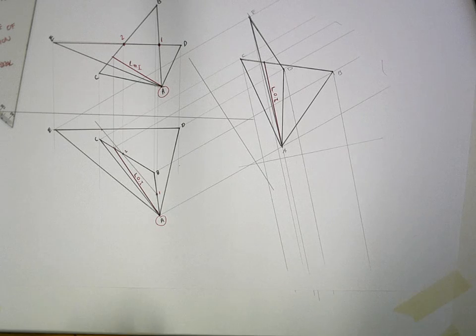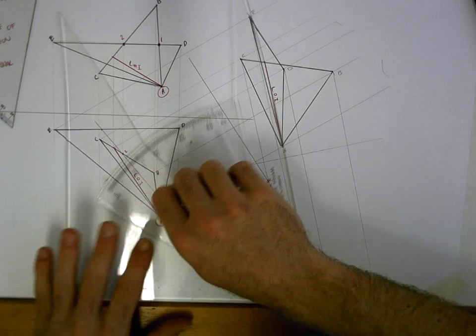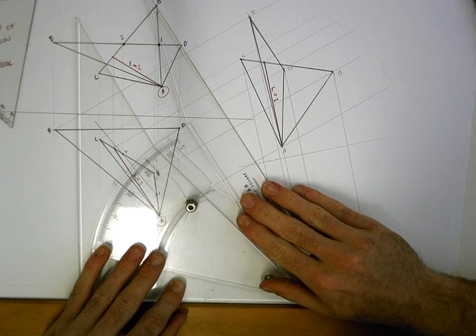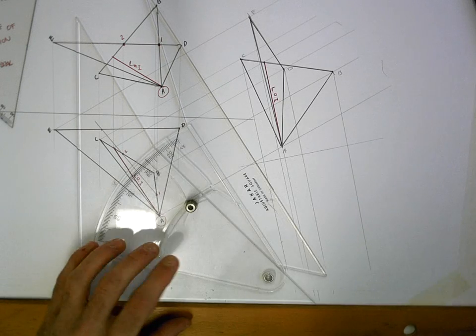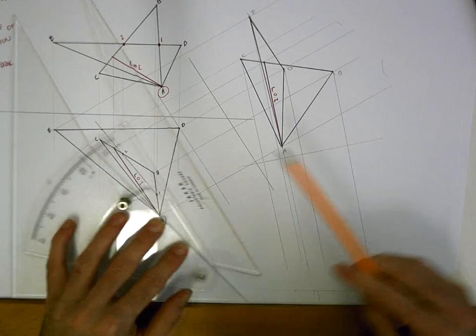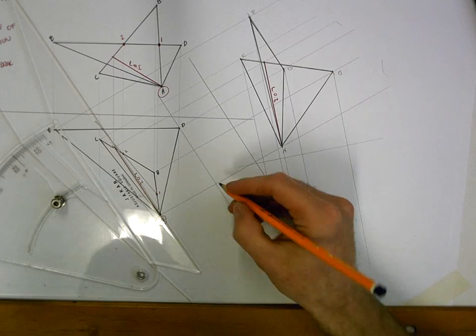So what I would do is create a measuring line or a datum line, as some people call it. You'll see it called that in the book a lot. So that just involves taking your X1, Y1 line and sliding it down closer to the plan view. You can use that as a measuring line.